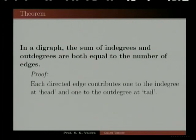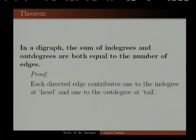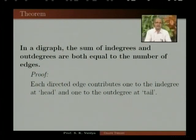This is the digraph version of the first theorem of graph theory. The proof is trivial: each directed edge contributes one to the in-degree at the head and one to the out-degree at the tail, and that is why in a digraph the sum of in-degrees and out-degrees are both equal to the number of edges.